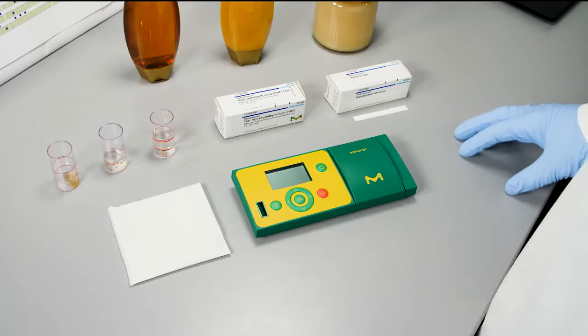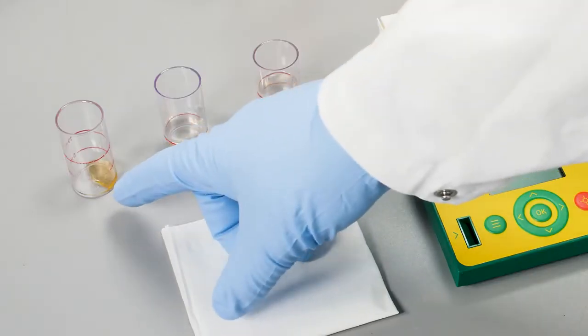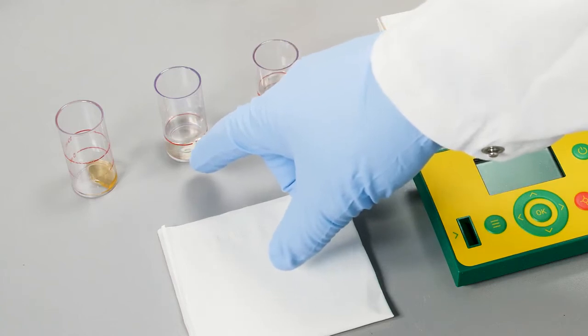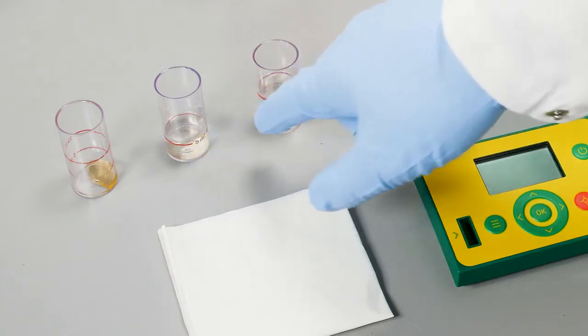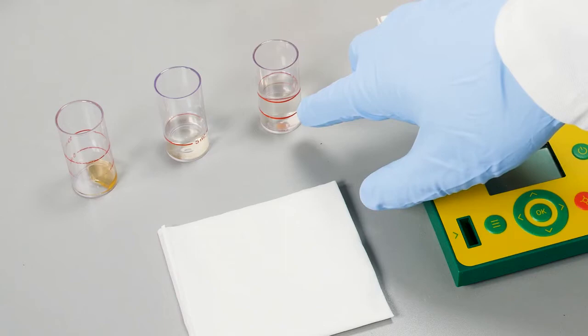For the sample preparation, we need first two and a half grams of the honey. We dilute it with distilled water and after it's diluted, then we fill it up to 10 ml, also with distilled water.